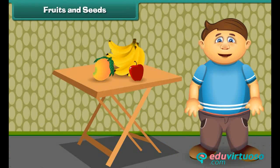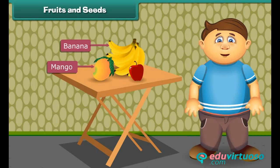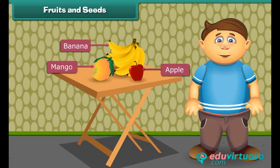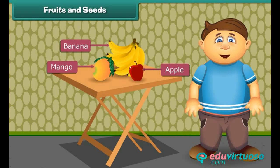Most of you like fruits. Fruit is the juicy part of the plant and it forms from the flowers of the plant. Fruits are of different shapes, sizes and colors. Fruits are good for health as they contain many vitamins. Seeds are present inside the fruits — some fruits like mango have only one seed, while others like apple and watermelon have many seeds.